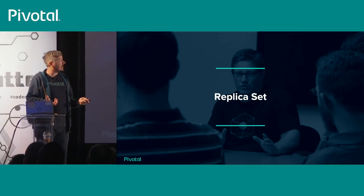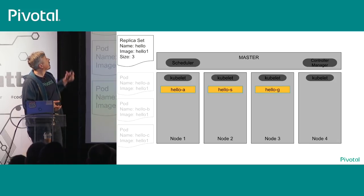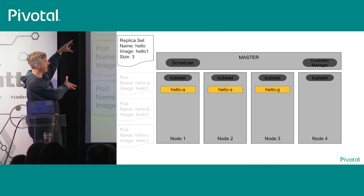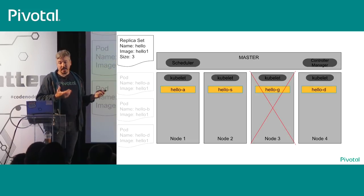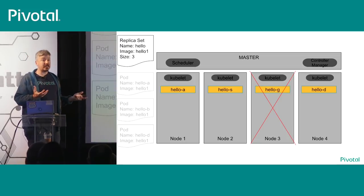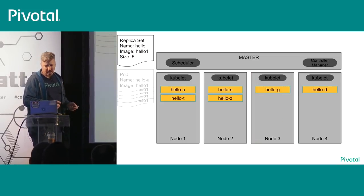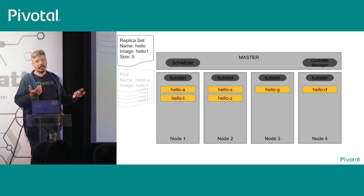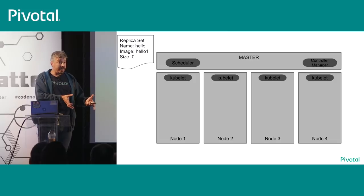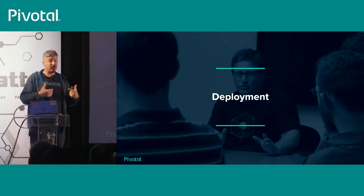That's where controllers come in. The first controller is a replica set, which ensures a set number of replicas of your application is running. If you ask for three, the replica set controller creates three pods and tracks them. If one dies, it creates a new one. Replica set becomes the minimum scalable unit — ask for one and it will always ensure one is running. If a node dies it gets that pod running elsewhere. You can resize — say you want five, it creates two more. You can even scale all the way down to zero, which is useful during upgrades.